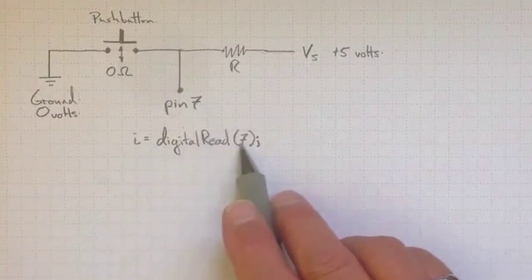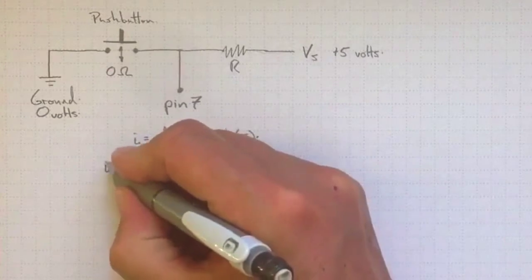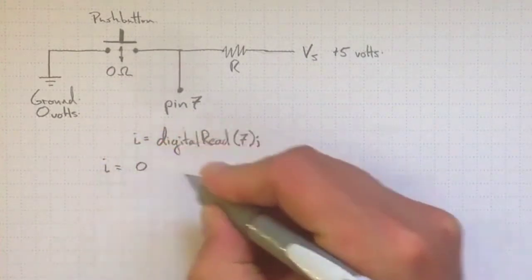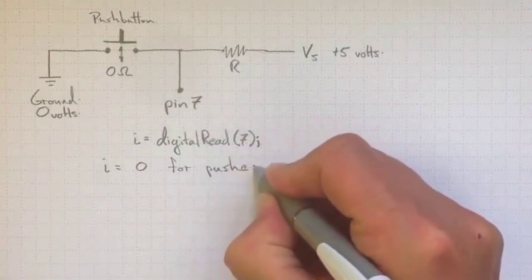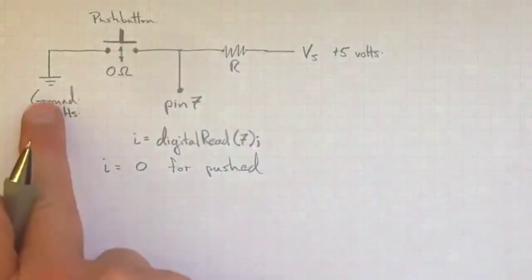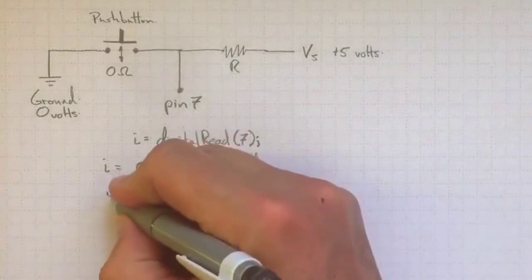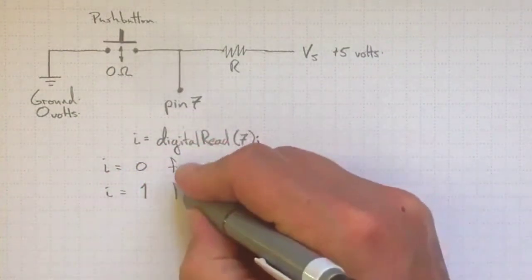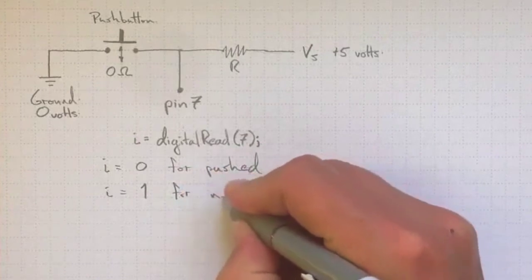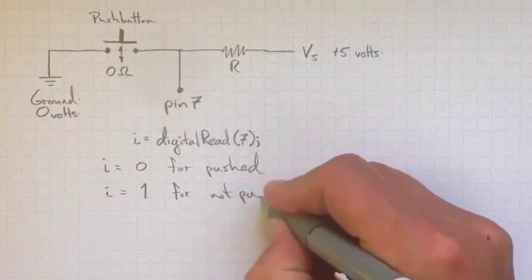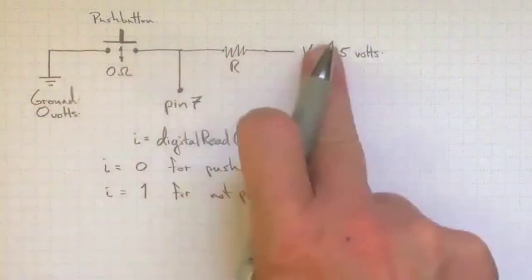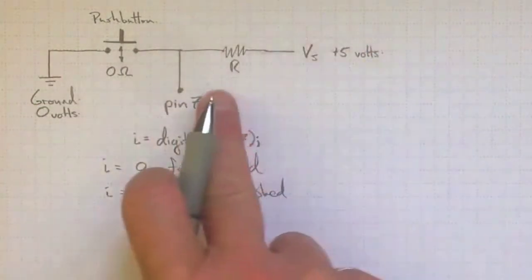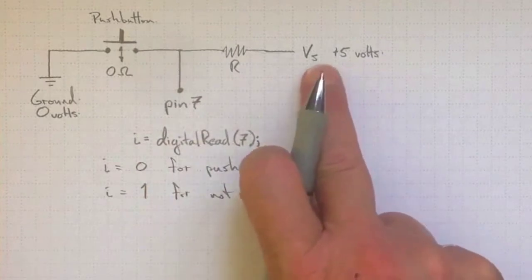When we read that pin with the statement digitalRead from pin 7, I will be equal to 0 if the button is pushed, making that contact there to ground, or I will be equal to 1 for not pushing the button. I.e., we'll get 5 volts if the button isn't pushed, because it's connected through this pull-up resistor to the supply voltage.